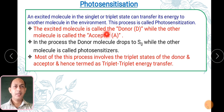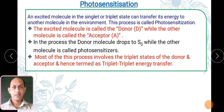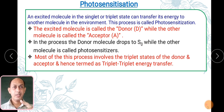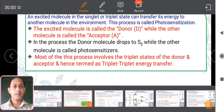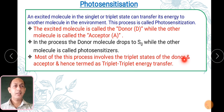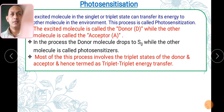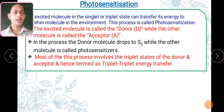The excited molecule is called a donor, while another molecule is called an acceptor. In the process, the donor molecule drops from S1 (singlet excited state) to S0 (ground state). That particular molecule is called the photosensitizer — the donor molecule is called the photosensitizer. Most of this process involves the triplet state of both donor and acceptor, and is hence termed triplet-triplet energy transfer. The triplet state has lower energy compared to the singlet state, so this process is also called triplet-triplet energy transfer.